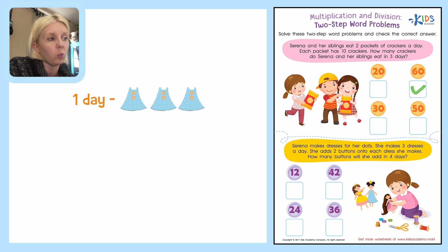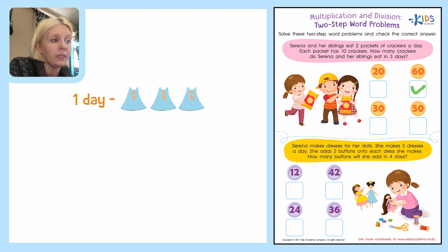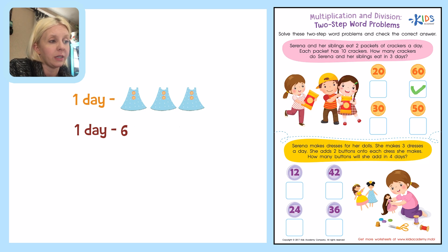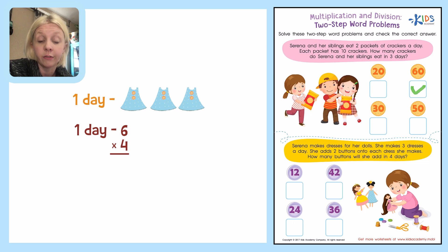How many buttons will she add in four days? If this is for one day, how many buttons does she make? She makes one, two, three, four, five, six. So in one day she makes six buttons. How many will she make in four days? I want to take six and multiply it by four — so six times four. We should know the answer: the answer is 24.